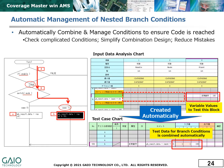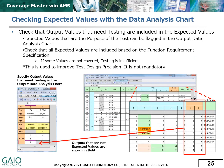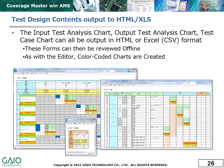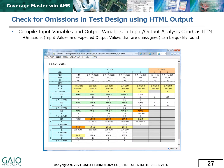Maximum coverage can be achieved even with nested branch conditions giving rise to multiple combinations. Input data is generated automatically to create test cases for every branch. Expected output values are also given in the data analysis chart, so the completeness of coverage can be easily checked if required. Charts generated by CoverageMaster WinAMS can be output as Excel-friendly CSV or in HTML format. Input and output data can be combined into a single chart to give an overview of the test content, where omissions can be quickly identified.